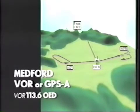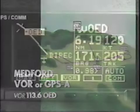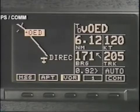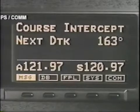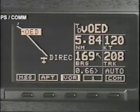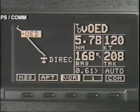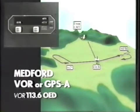Now fly the procedure turn. As you intercept the 162-degree radial, the GX receiver will automatically resume flight plan sequencing, and a course intercept message tells you that you're about to intercept the inbound course, your next heading. OED now becomes the final approach fix.